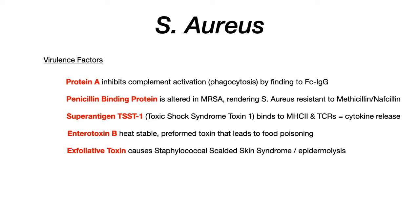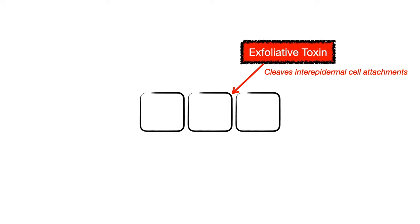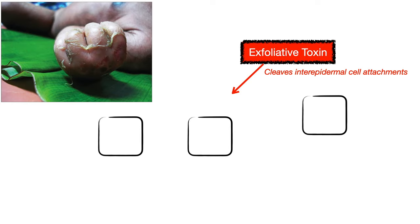The last virulence factor is exfoliative toxin — and again the name tells you we're dealing with the skin. This causes staphylococcal scalded skin syndrome and epidermolysis. Exfoliative toxin is a protease that cleaves interepidermal cell attachments, so instead of those cells anchoring to one another they just slough off. You get skin sloughing and a scalded skin appearance. Classically this occurs in younger toddlers and young children.